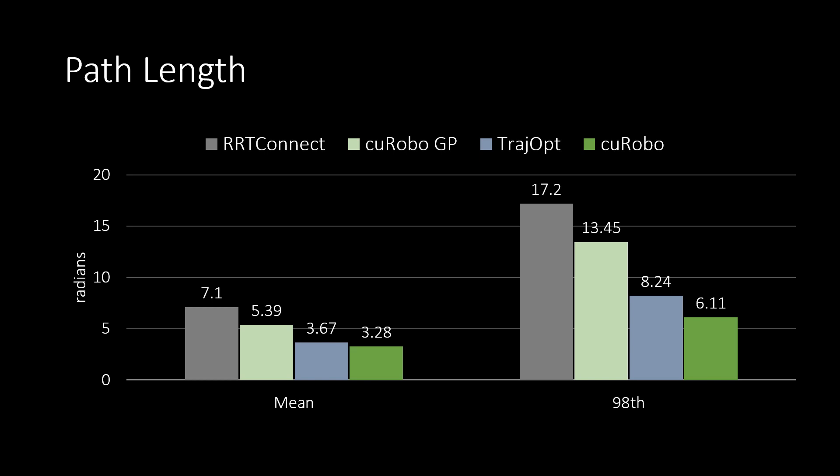Kurobo reduces it even further, bringing the average path length to 3.28 radians. Overall, Kurobo reduces the path length by 11% on average and 28% on the 98th percentile compared to TrajOpt.